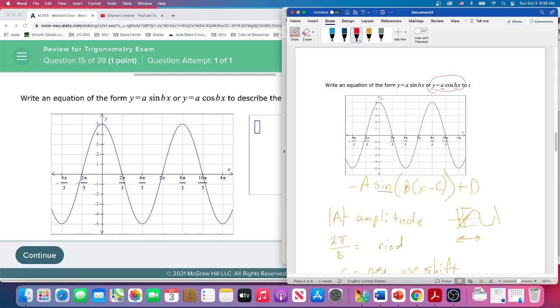Now remember all we need is the a and the b. So a is going to have to deal with the amplitude, how high is it. From the x-axis it goes up to five and it goes down to negative five.